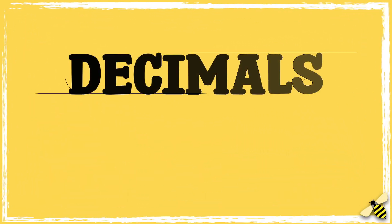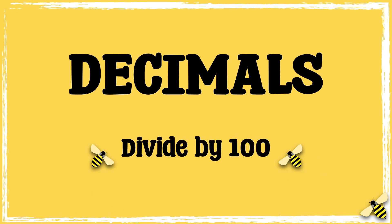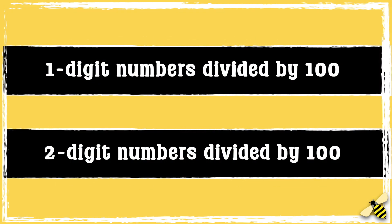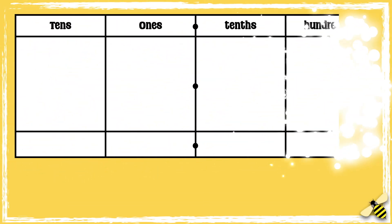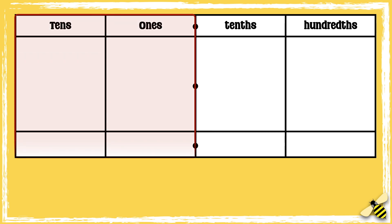In this video we're going to look at how to divide numbers by a hundred. First we're going to look at one digit numbers divided by a hundred, and then we're going to look at two digit numbers divided by a hundred. Here is a place value grid. Tenths and hundredths sit beyond the decimal point, so before the point we have the whole number and after the point we have the part.